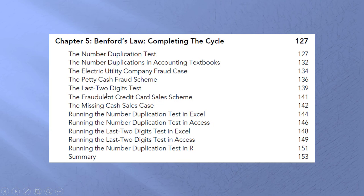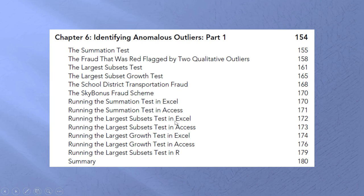The Benford's Law test usually finishes off with the number duplication test and the last two digits tests. These are tests that complement what we've already done, and again we talk about how to run them in Excel, Access, and in this case R is introduced.